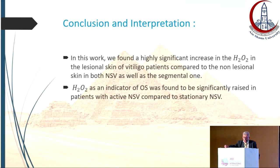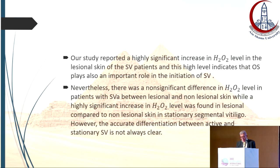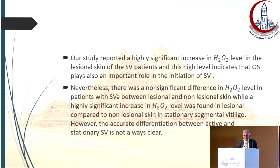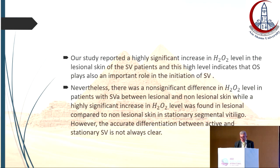Hydrogen peroxide as an indicator of oxidative stress was found to be significantly raised in patients with active non-segmental compared to stationary non-segmental. Our study also reported a highly significant increase in H2O2 level in lesional skin of segmental vitiligo, indicating that oxidative stress plays an important role in the initiation of segmental vitiligo. Nevertheless, there was an insignificant difference in H2O2 level in active segmental vitiligo between lesional and non-lesional skin, while a highly significant increase was seen in stationary segmental vitiligo.